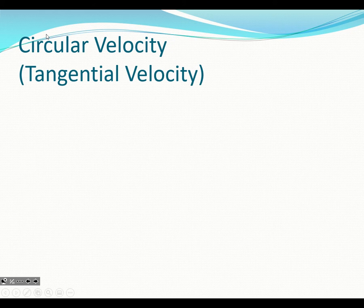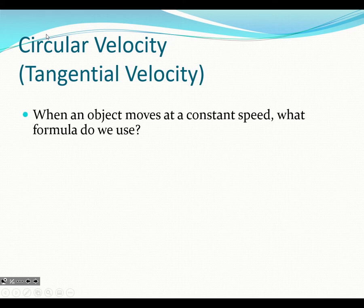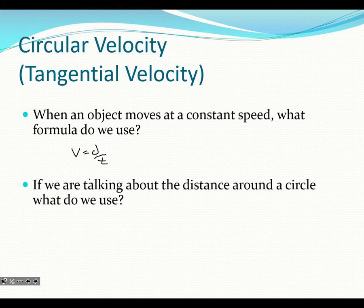Circular velocity, also known as tangential velocity. So when an object moves at a constant speed, what formula do we use? Well, we use v equals d over t. And if we're talking about the distance around a circle, we could use circumference equals 2 times pi times the radius, or pi d, but 2 pi r — same idea.